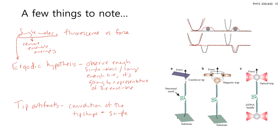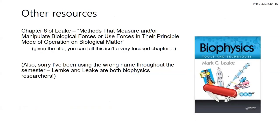All force techniques discussed — atomic force spectroscopy, magnetic trapping, and optical trapping — can measure the same phenomena with different instrumentation, such as pulling on a DNA molecule. Refer to chapter six of the Leake book for further details and derivations supporting the problem sets.